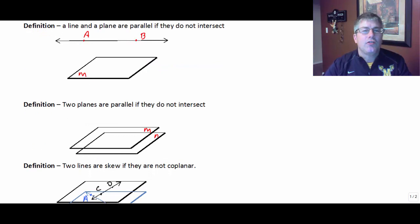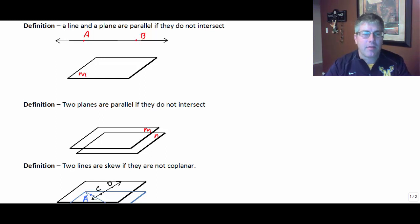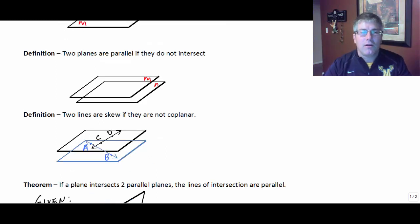Second definition: two planes are parallel if they do not intersect. So if two planes do not intersect, then they are parallel. Or conversely, if two planes are parallel, then they do not intersect.